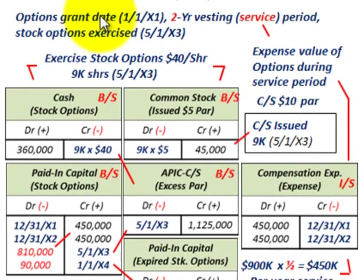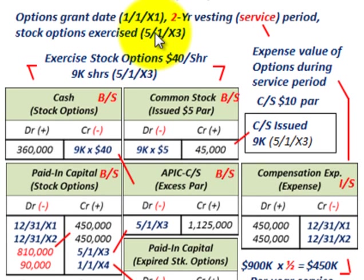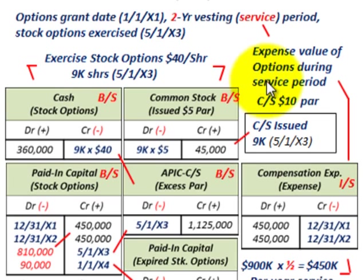The options' grant date is 1/1/X1, and we really don't make any entries on the grant date — we just note it in our records. Our grant date is 1/1/X1, we have a two-year vesting or service period required, and the stock options were exercised on 5/1/X3. We have to deal with the vesting or service period, where you take the expense of the value of the options and expense them out during the service period.